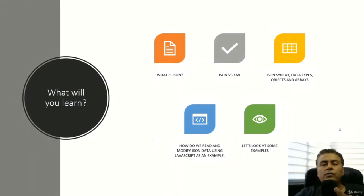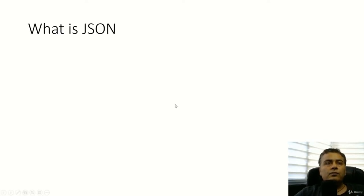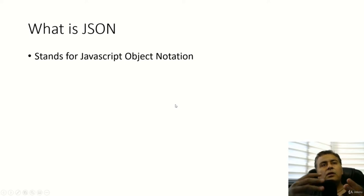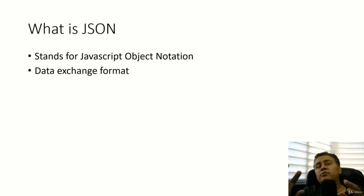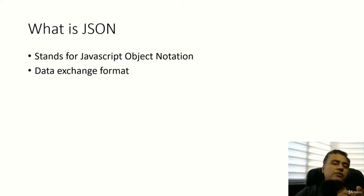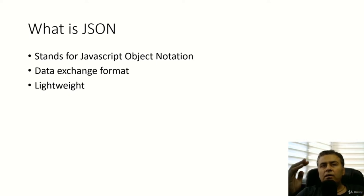Let's first have a look at what JSON is. JSON stands for JavaScript Object Notation. It is similar to how we represent objects in JavaScript — those kinds of formats are used here. It is nothing but a data exchange format. It's lightweight — we will also see that when we compare XML and JSON — and it is easily understandable and readable.